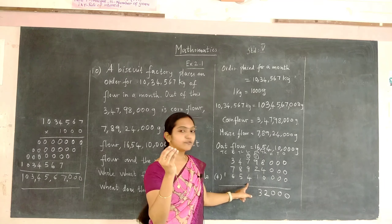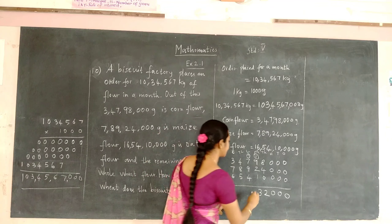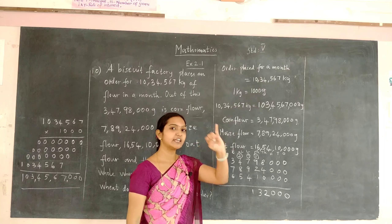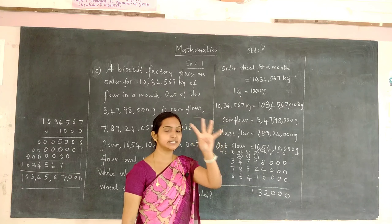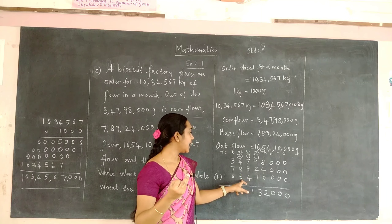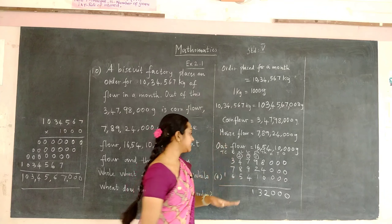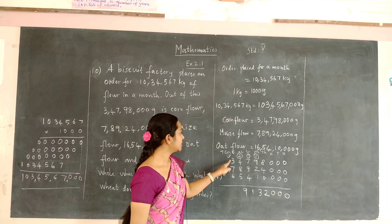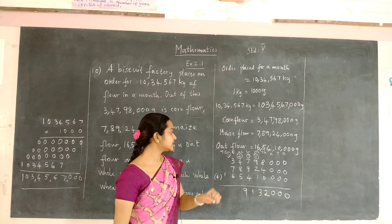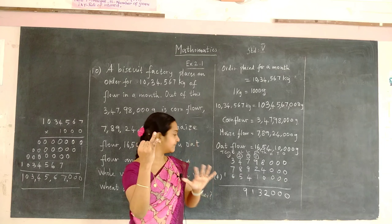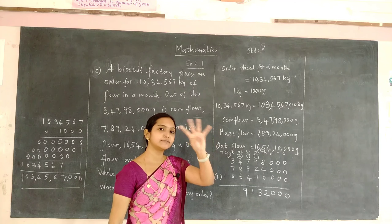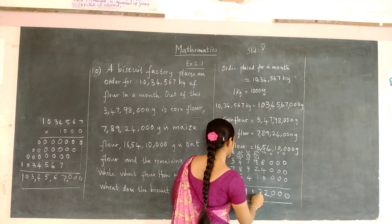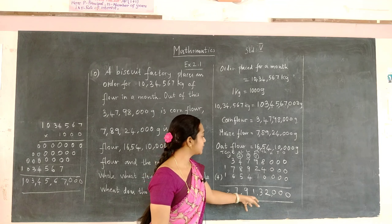To 17 add 4 gives 21. Add 2 to 4 gives 6, then add 8 gives 14. Add 5 to 14 gives 19 — write 9 and carry 1. 3 plus 1 is 4, add 7 gives 11, add 6 gives 17 — write 7 and carry 1. 1 plus 1 is 2. So we have got the answer as 27 crore 91 lakh 32,000 grams as the total of corn, maize and oat flour.